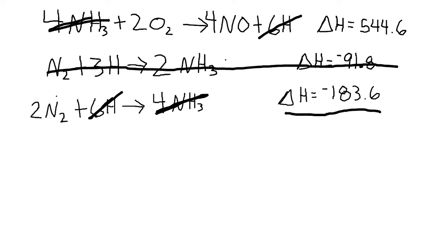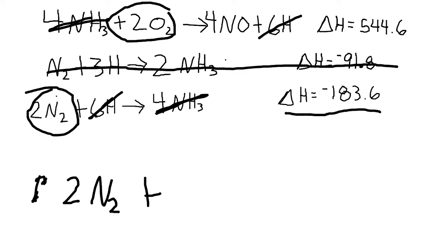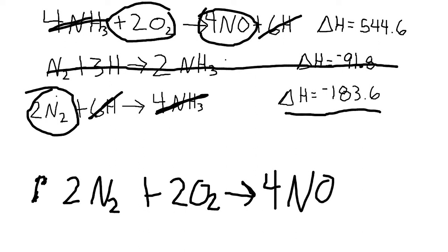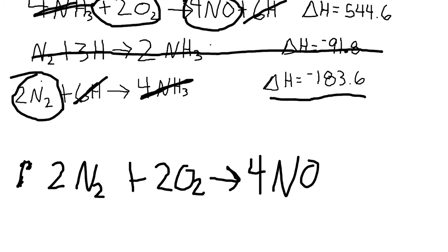And then I'm going to take all of my reactants and write them down. So 2N2 plus 2O2 yields, and then the only product I have left is the 4NO. And then I can add my enthalpy changes together. And the thing to remember with adding the enthalpy changes is to keep track of your signs. This is a positive sign. This is a negative sign. So the change in enthalpy will be 361.